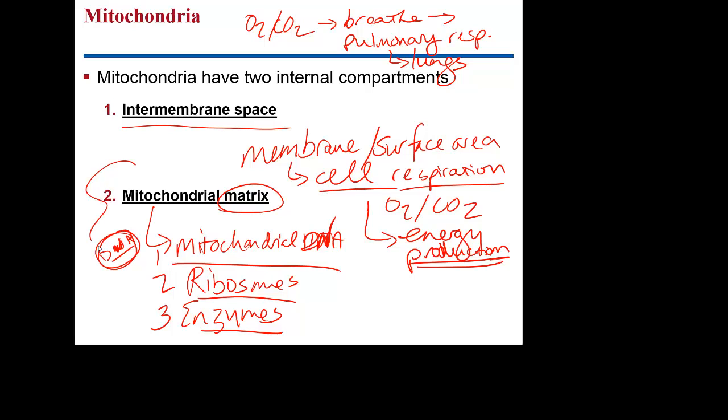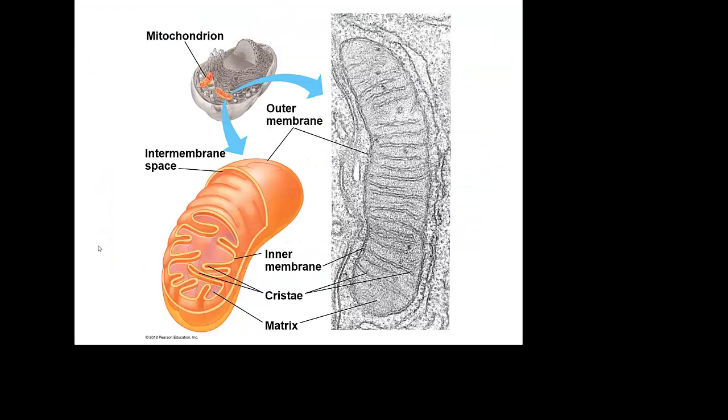The mitochondria also have a very interesting design in that they are able to replicate themselves. So they self-replicate. This is extremely important because if you have a cell that is doing large amounts of energy production, these will wear out and they will need to be replaced. The mitochondria are constantly working to replace themselves.